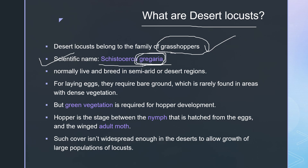Normally, desert locusts live and breed in semi-arid or desert regions. For laying eggs, they require bare ground, which is rarely found in areas with dense vegetation.